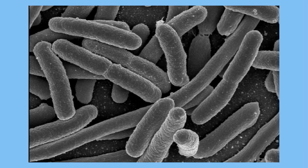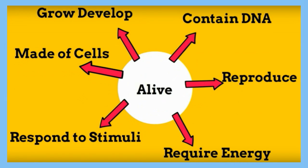In order to be considered alive you must have each of the following traits: be made of cells, contain DNA, require energy, reproduce, respond to stimuli, and grow and develop.